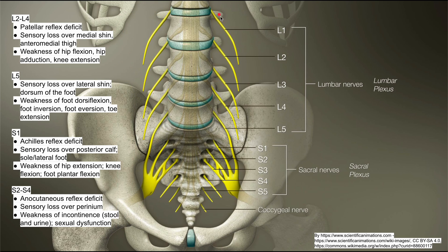As to what's actually compressing the nerves, that could be a number of things — vertebral degeneration, a herniated disc, or a back muscular problem. There are a number of things that can compress the nerves. This will just help you localize which nerve is being compressed.